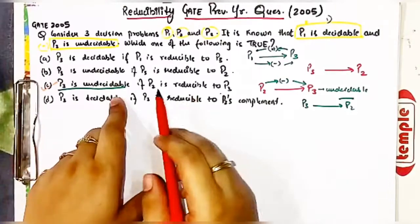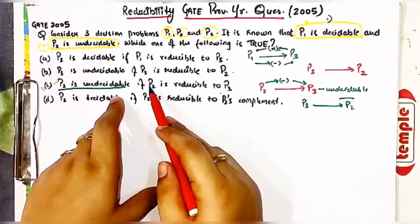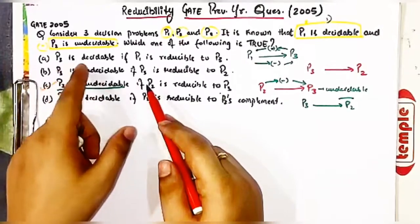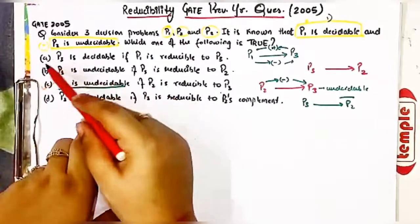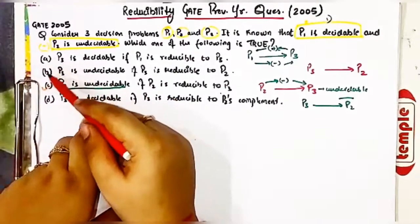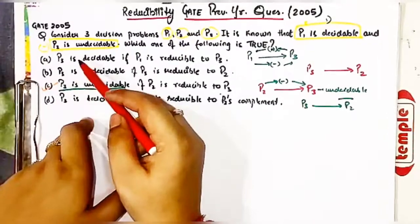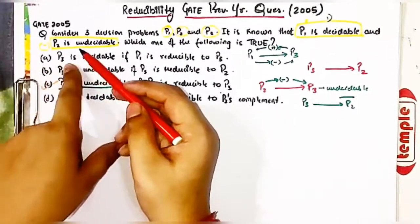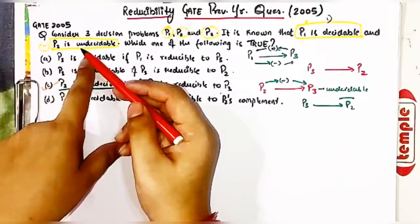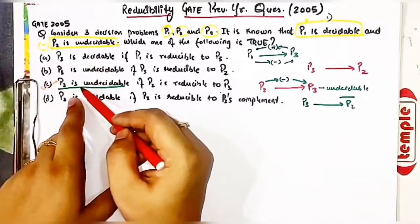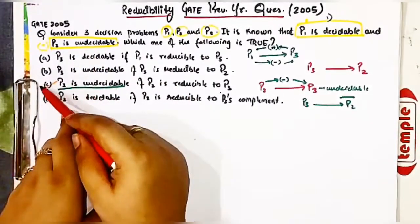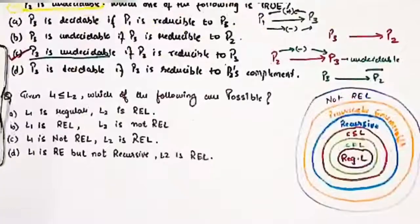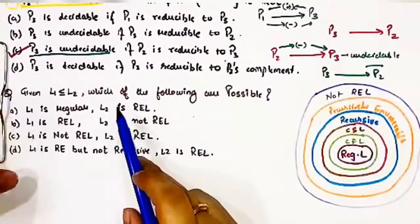Hence we have only one correct option, which is C. Since it was a multiple choice question, only one answer exists. If it were a multiple select question where multiple answers were possible, other options could also be correct, as problems can be decidable as well as undecidable. But with only one answer to select, C is absolutely correct.